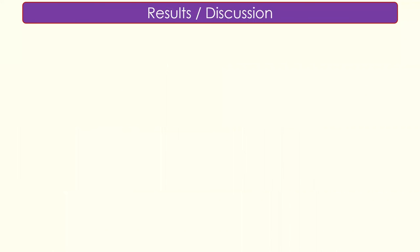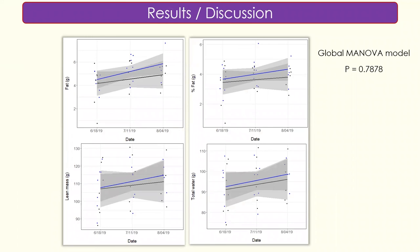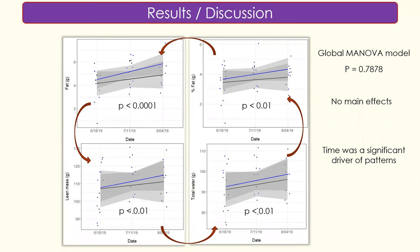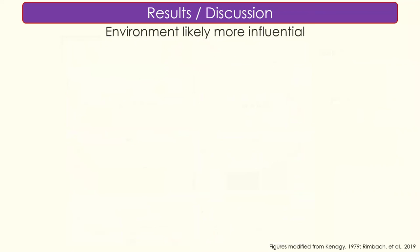The global model showed no significant difference in terms of treatment on body condition, and the univariate models also showed no main effects on fat, percent fat, or lean mass. However, time was a significant driver of body condition patterns, hinting that the environment or whatever processes occur across the summer likely plays more of a role. In hindsight, these indices were auto-correlated since they came from the same individuals; in the future I would focus just on fat, percent fat, and body weight as energy stores.